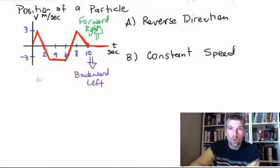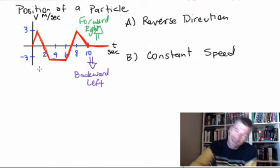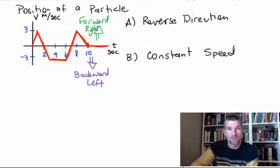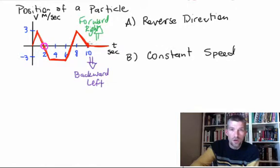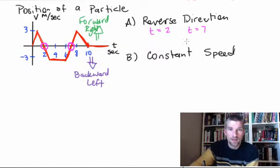Question one: where do we change direction? We change direction at a specific instant in time — you don't gradually go from forward to backward, there's an instant where you are stopping and changing direction. On these problems, that instant is where you cross the horizontal axis all the way through. So you are reversing direction when t is equal to 2 and when t is equal to 7.